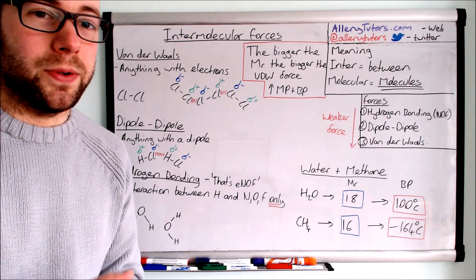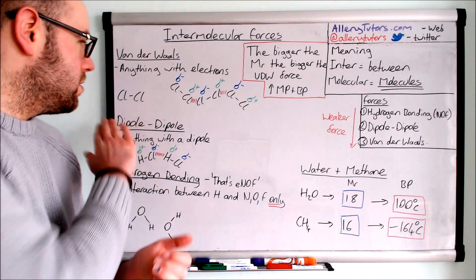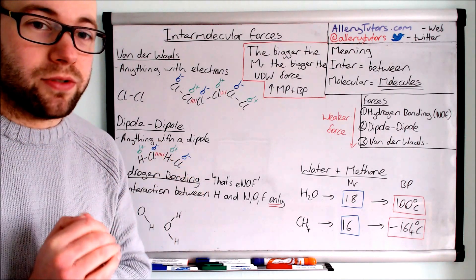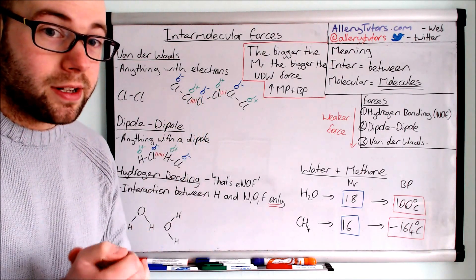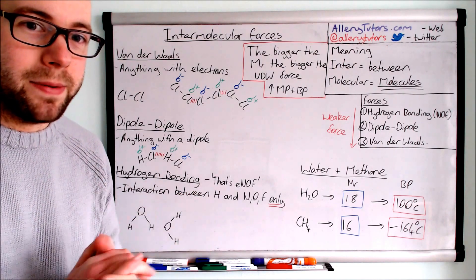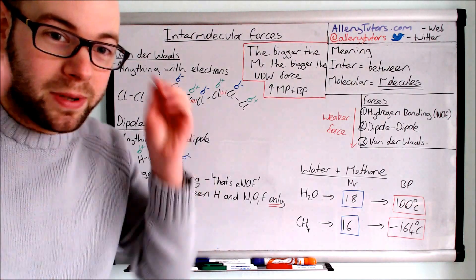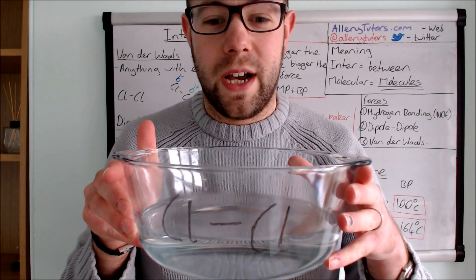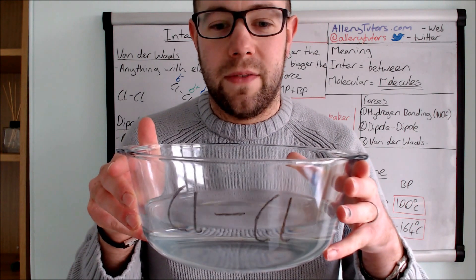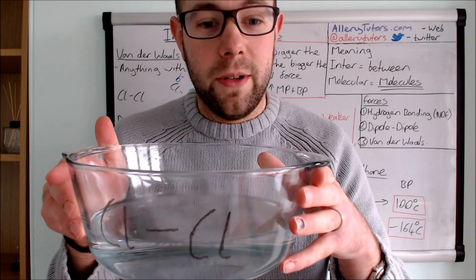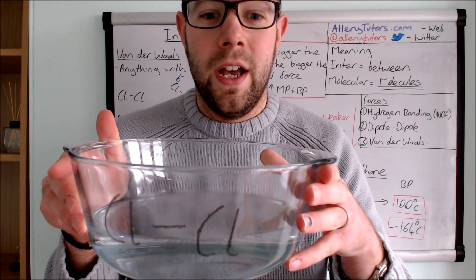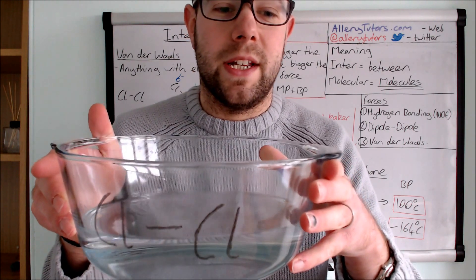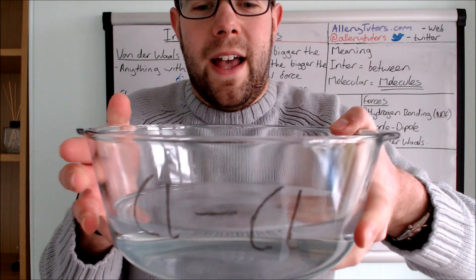Let's see what a van der Waals force actually is. Here I've got a non-polar chlorine molecule, Cl₂, as an example. Normally the electrons are spread equally across that molecule. I'm going to explain this using a bowl of water — here's the bowl with a chlorine molecule drawn on the side of the dish. The water inside the bowl symbolizes electrons, and you can see that normally the electrons are evenly spread across the molecule.